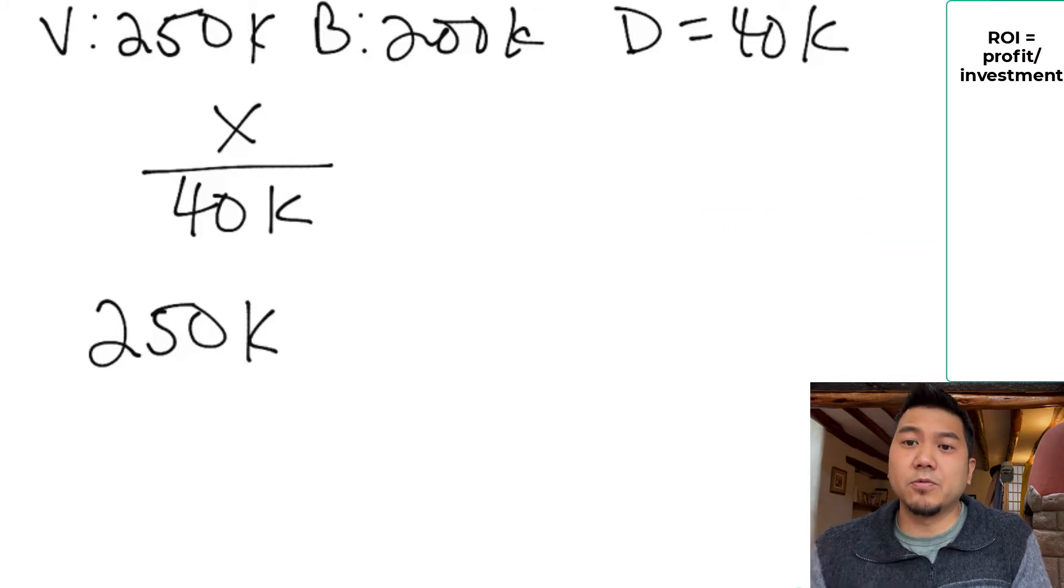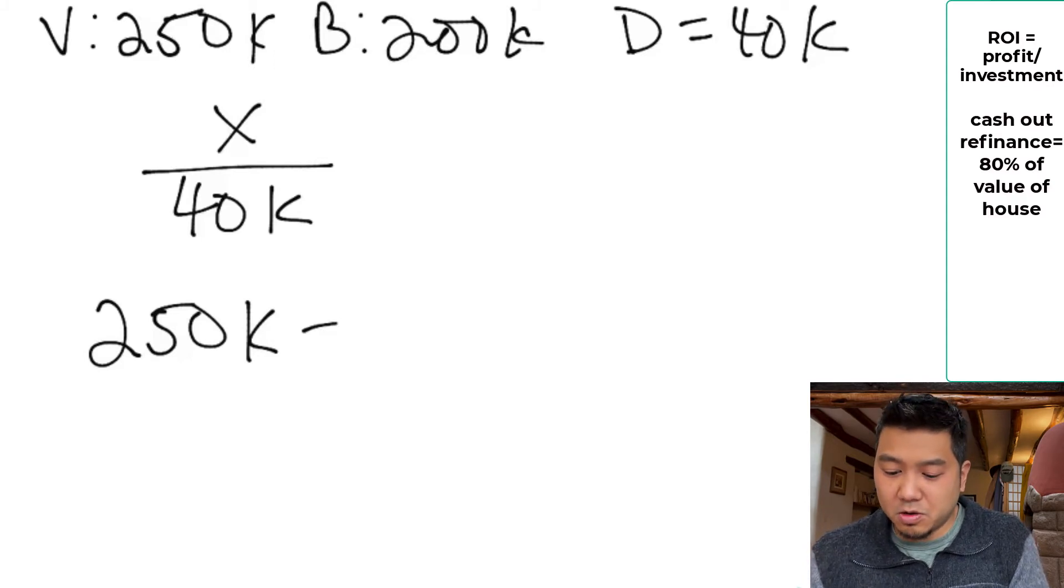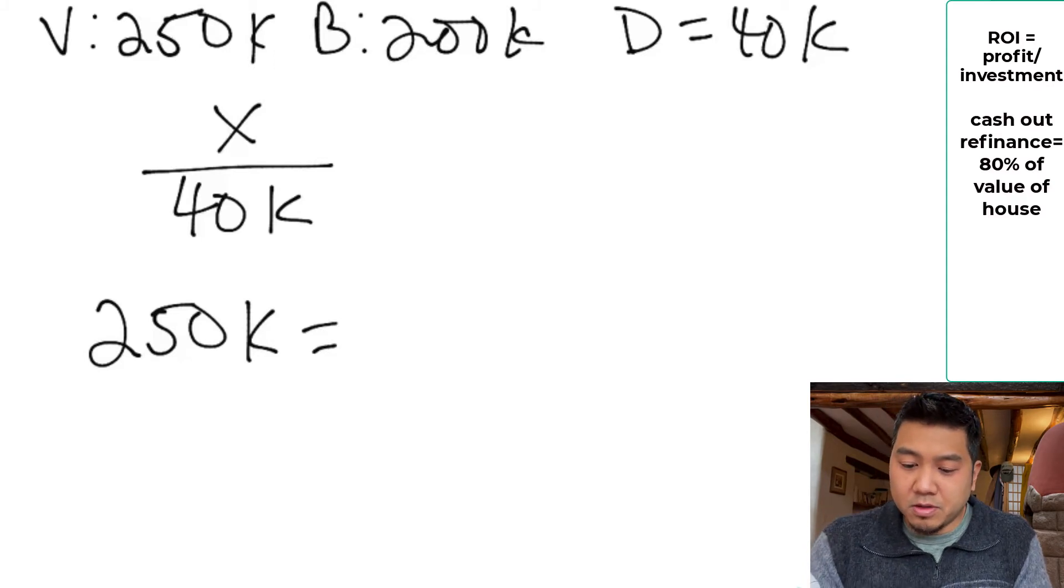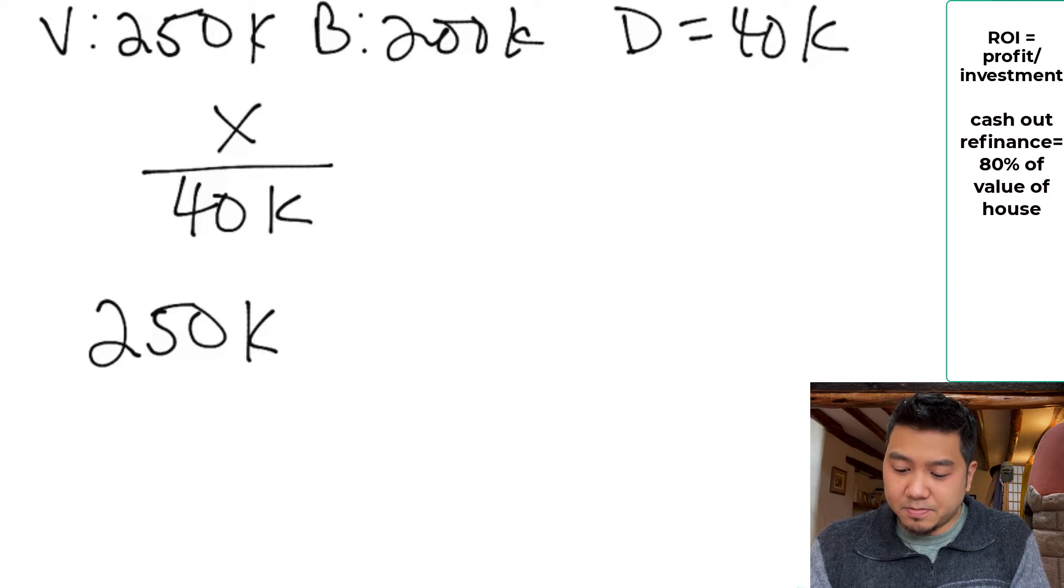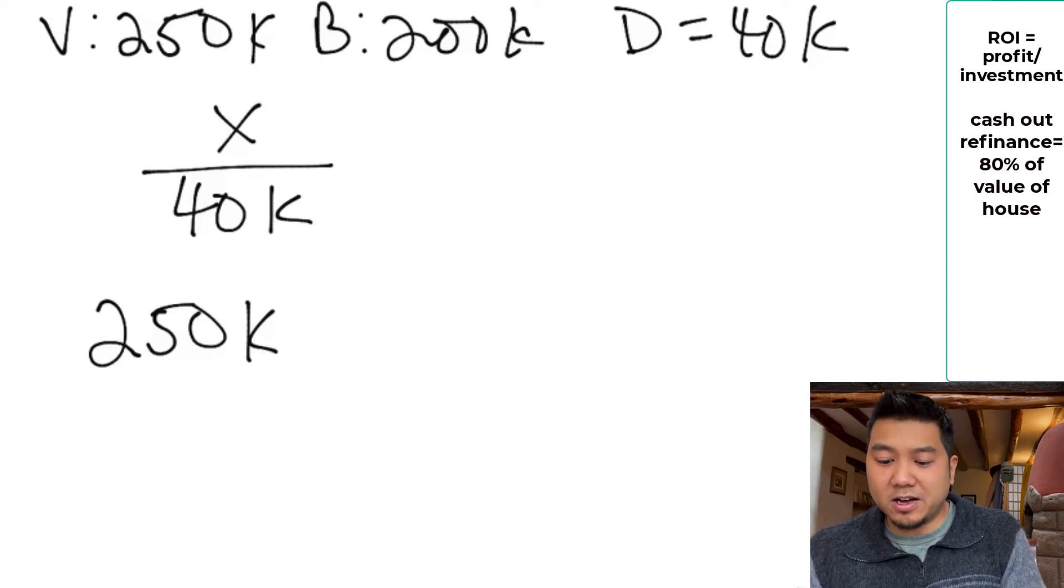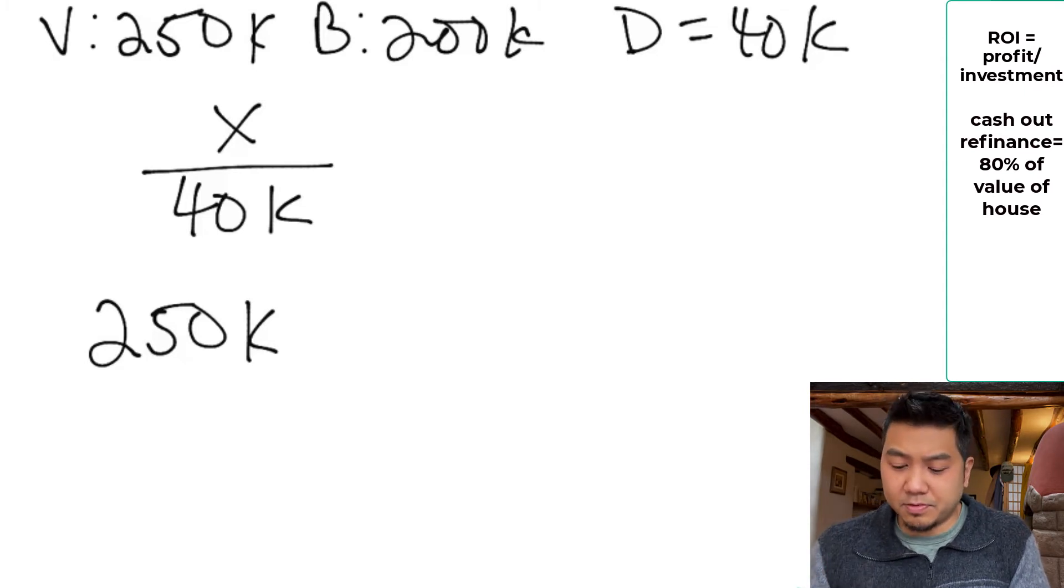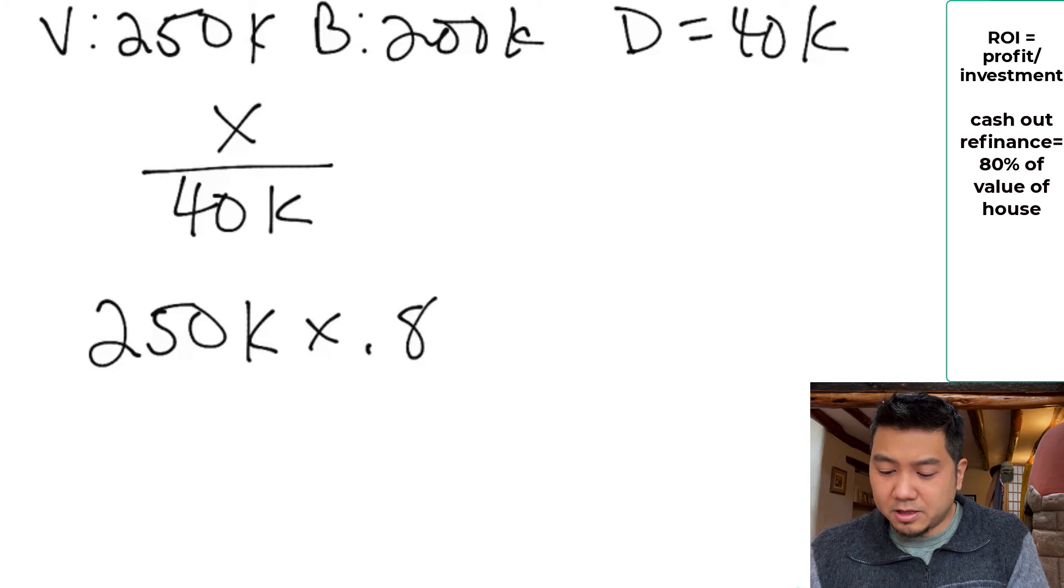The bank says, okay, we will give you 80% of the value of the house. This is called the LTV loan to value ratio. In a separate video, we'll talk about that. But you multiply this by 0.8. This gives you $200,000.